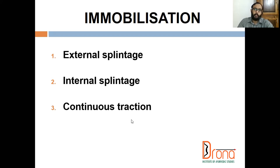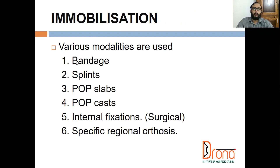The third option is continuous traction, used in femur shaft fracture or tibia fracture. It can be either bone traction or skin traction. Various modalities are used for immobilization including bandages, splints such as bamboo splints, malleable aluminum splints, metallic splints, or wooden splints. Malleable aluminum splints can be shaped according to the affected joint.